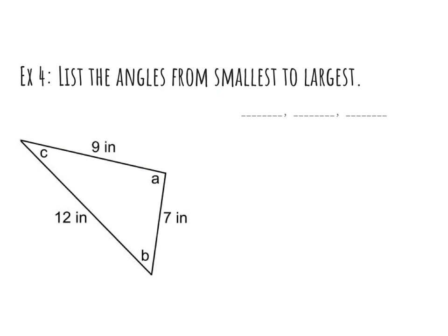This time we're listing the angles, smallest to largest. I'm finding my smallest side, 7 is across from C, my second smallest side is across from B, and my largest side is across from A.